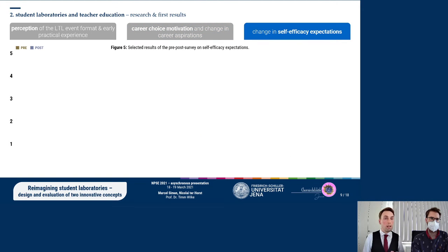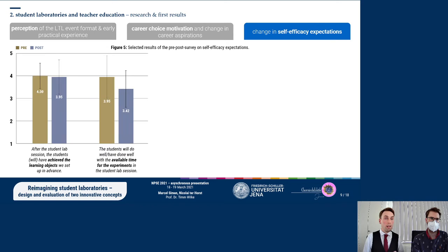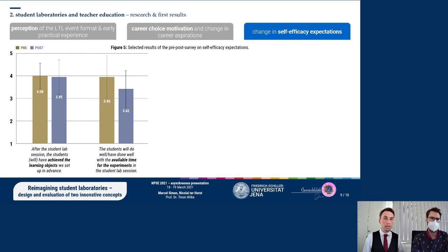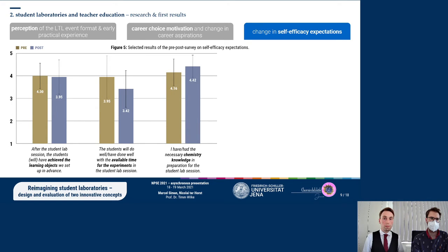Finally, participants assess the quality of the student lab session and their own competencies. The first two items show that participants rate the effectiveness of their planned session with high agreement; however, there are partly notable differences between pre and post scores — for example, regarding the time available for experiments. In terms of chemistry knowledge needed, participants indicated that they felt very well prepared, and this belief increased in the post survey.